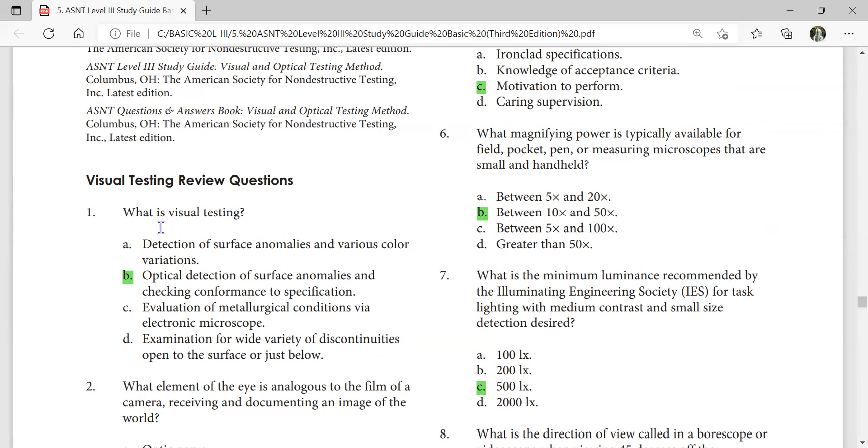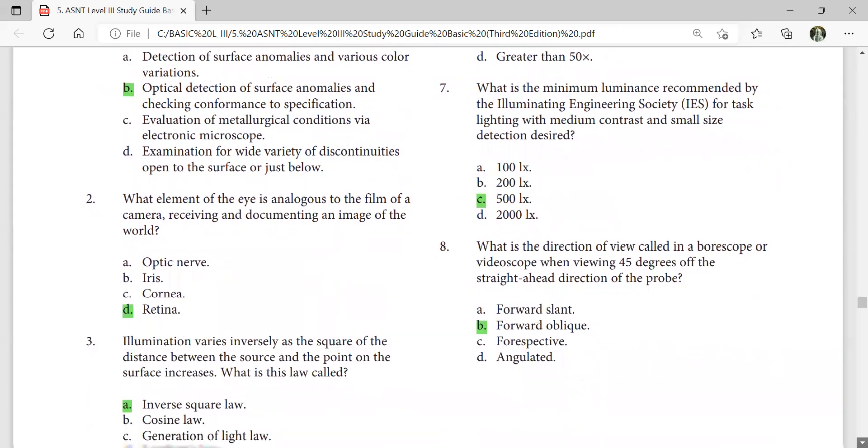What is visual testing? Optical detection of surface anomalies and checking conformance to specification. What is the minimum luminance recommended by the Illuminating Engineer Society IES for task lighting with medium contrast and small size detection result? 500 lux. That is minimum.